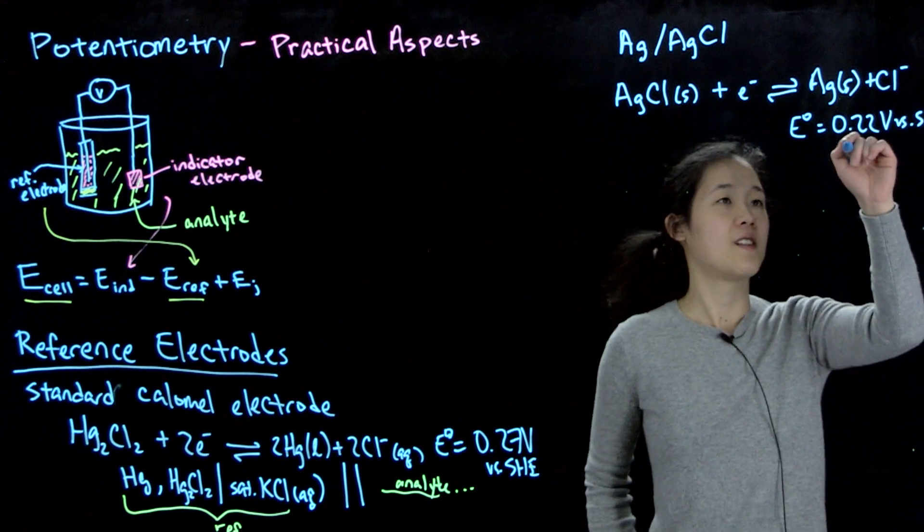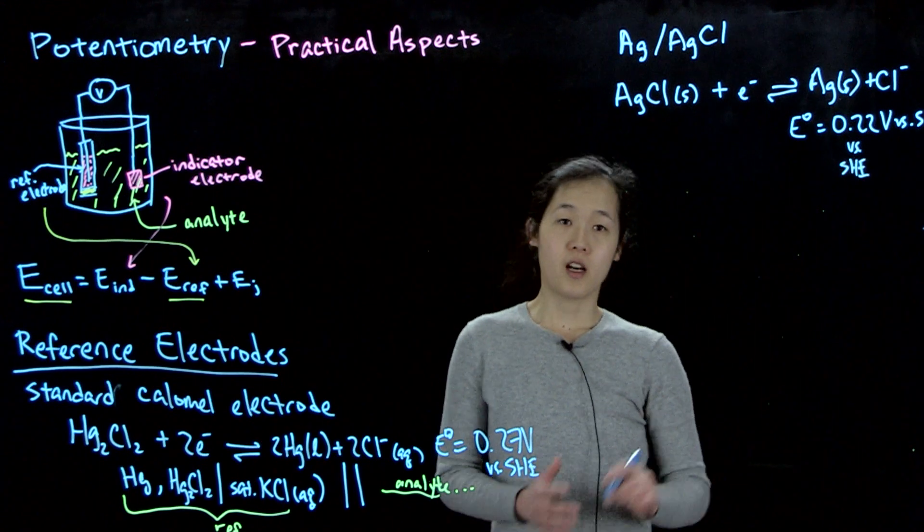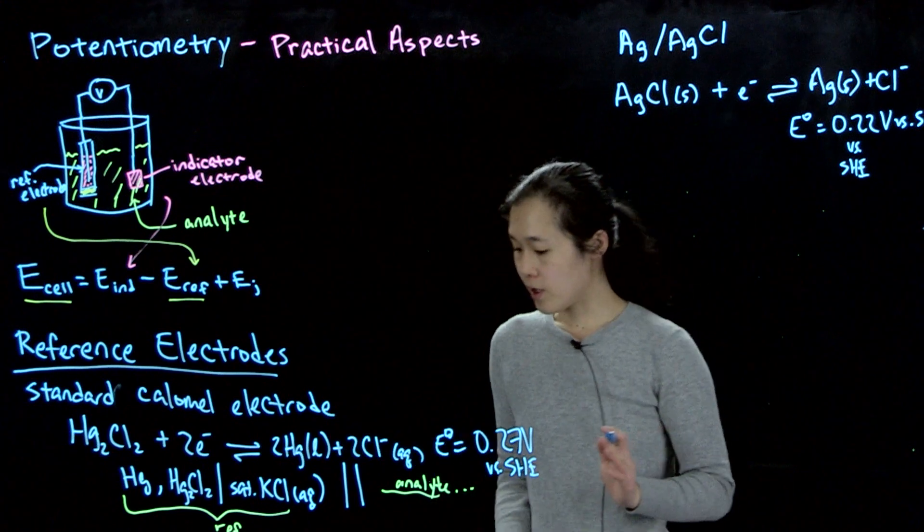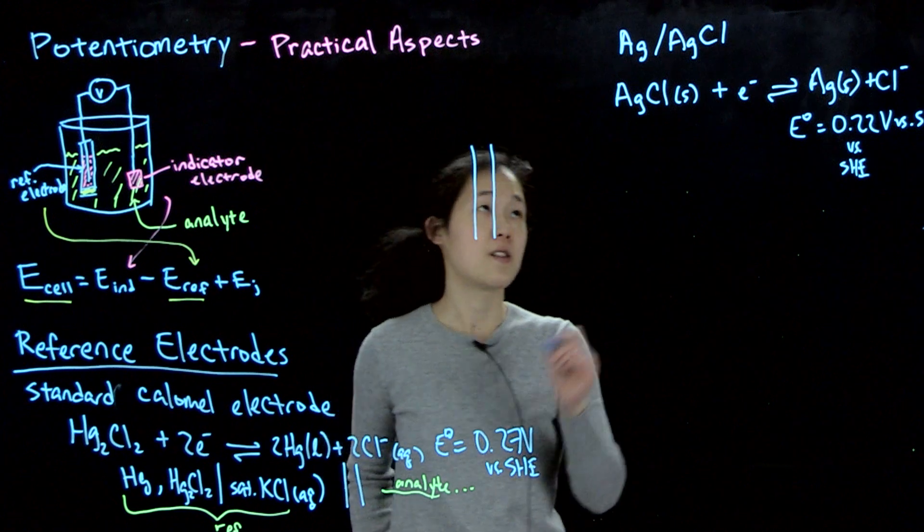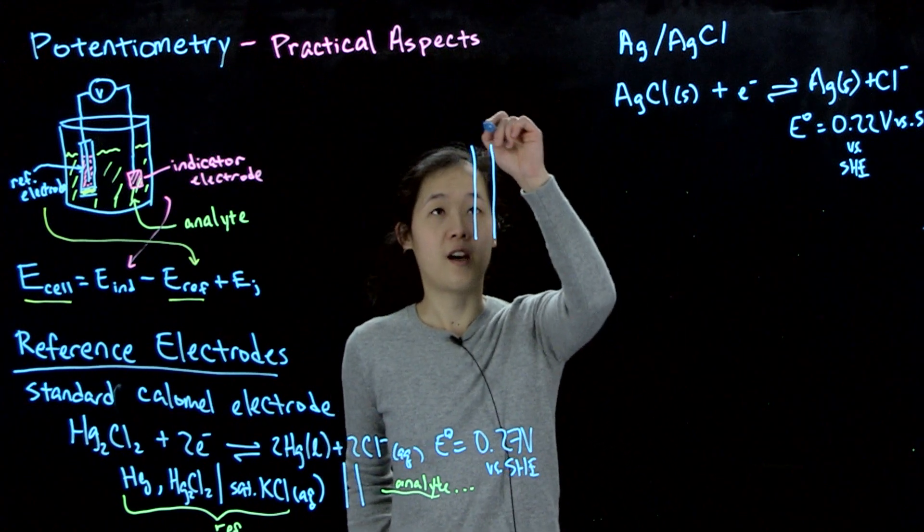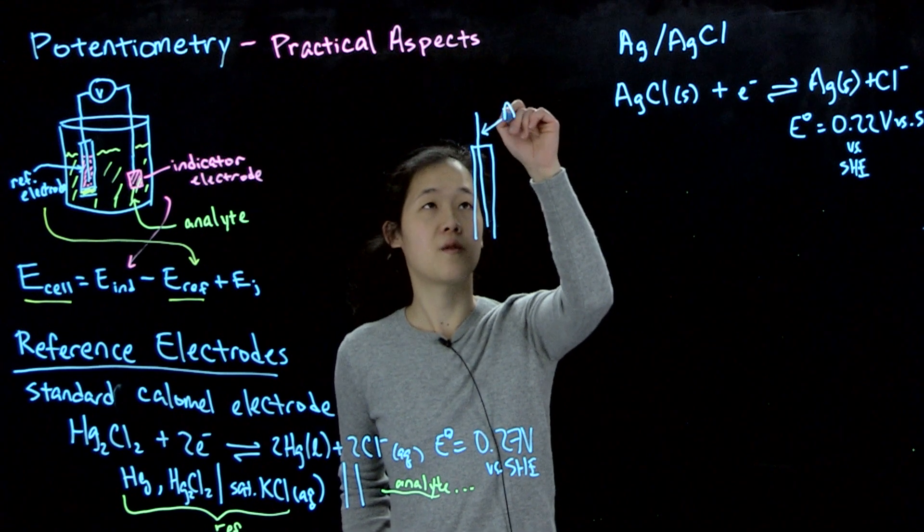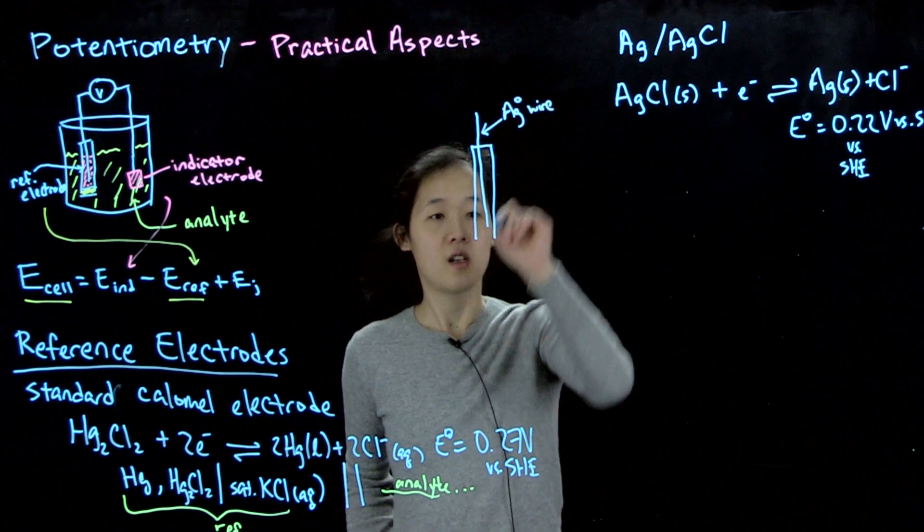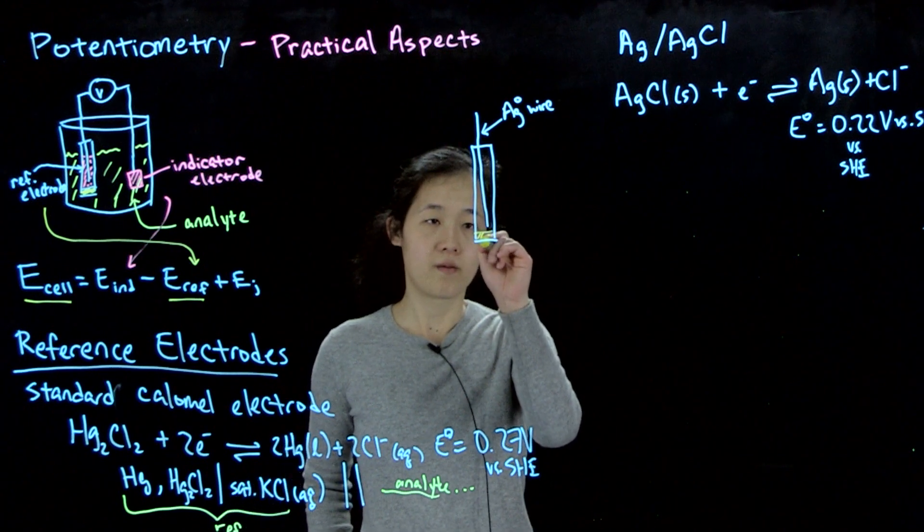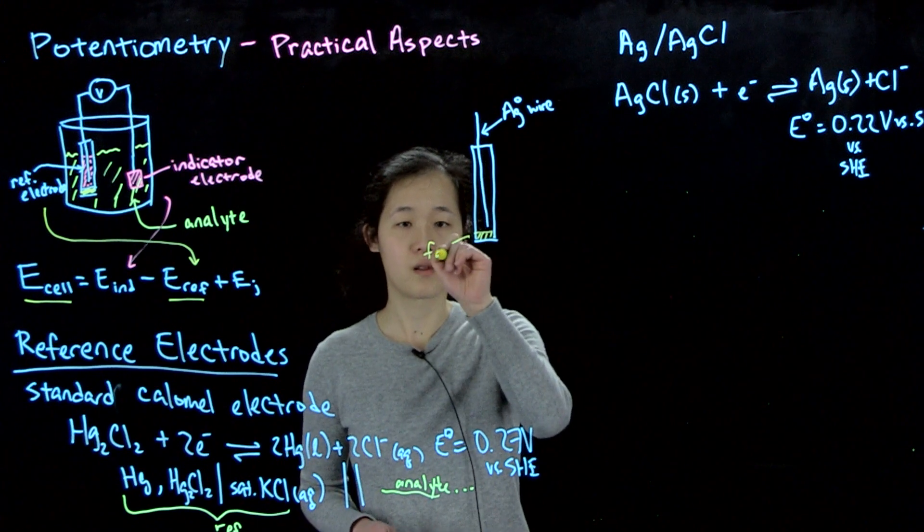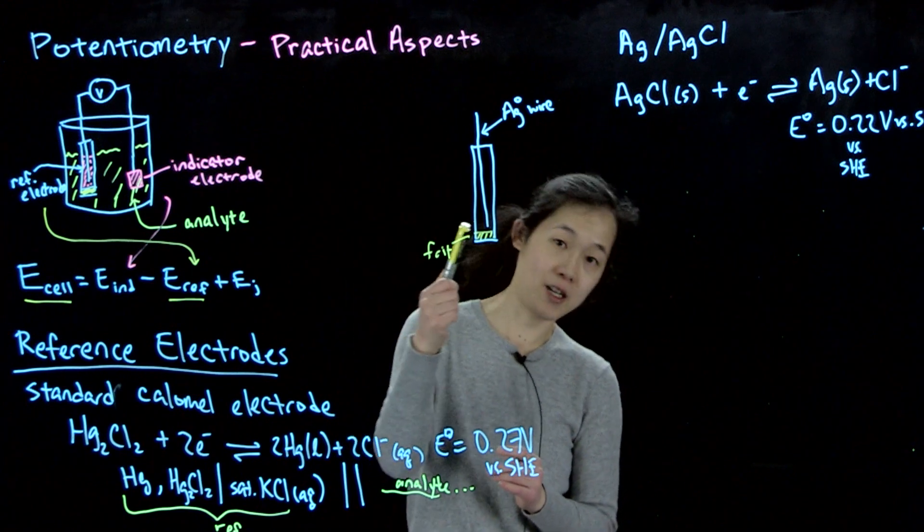And then this potential is 0.22 volts versus SHE. So the way these electrodes work is often what you'll have is some sort of glass tube, just like I've drawn over here. And then so for the silver-silver chloride electrode, we'll have this silver wire. So this will be some sort of sealed tube. Here's my silver wire. And here, again, we have some sort of frit.